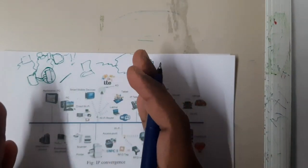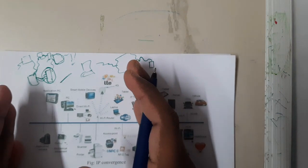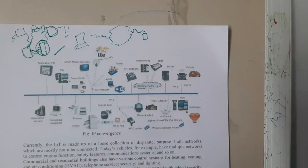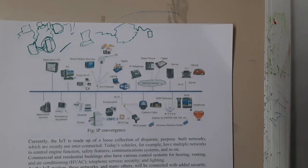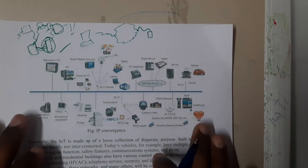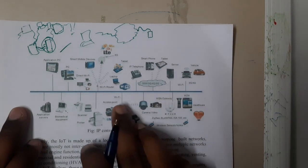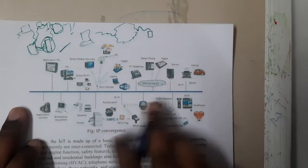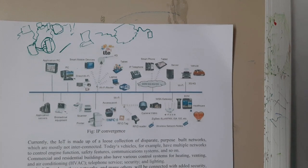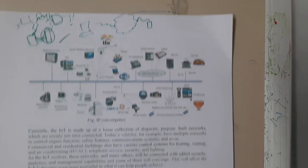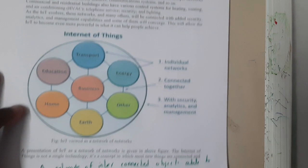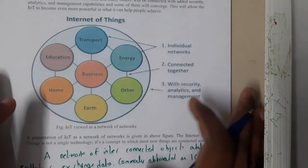So this concept of exchanging data between devices through the internet is nothing but Internet of Things. Here is an image for Internet of Things — basically all the devices are connected to the internet, and you can say that as Internet of Things.